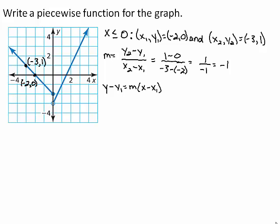Now use the point-slope form of an equation of a line to find the equation of the graph when x is less than or equal to 0. Substituting negative 1 for m, negative 2 for x1, and 0 for y1, you get y minus 0 equals negative 1 times the quantity x minus negative 2. Distributing, you get y equals negative x minus 2.